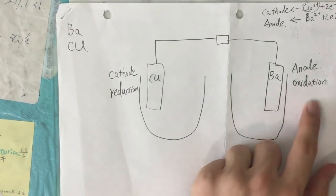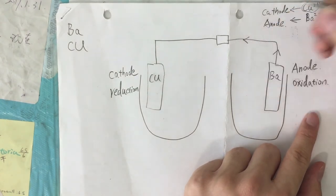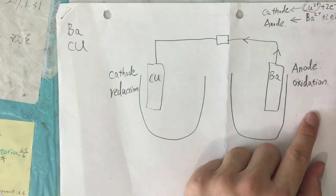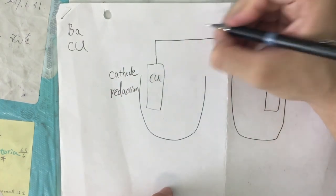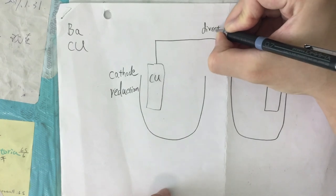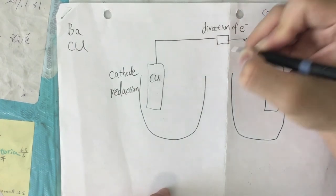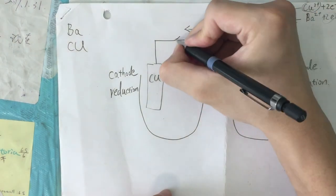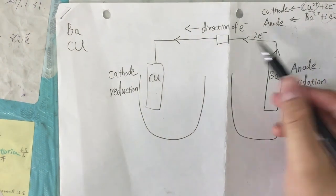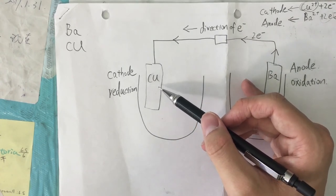Oxidation means donating electrons, so barium gives out two electrons. The electrons are going to flow from the anode to the cathode. So the direction of electron flow is this way, and the copper cathode is going to receive these electrons.